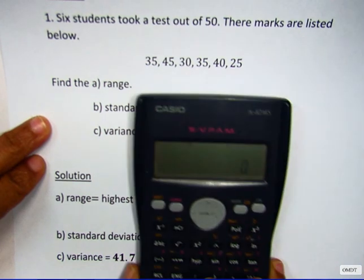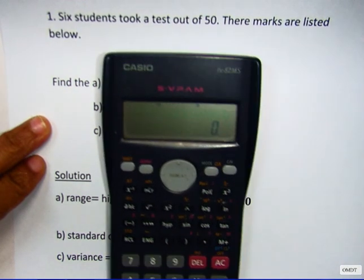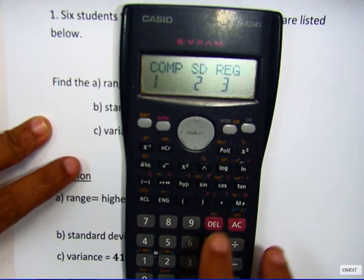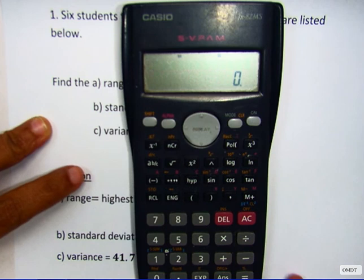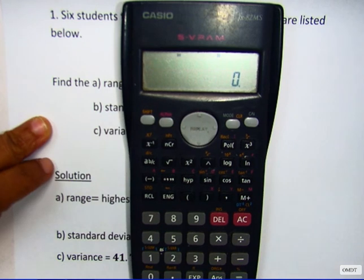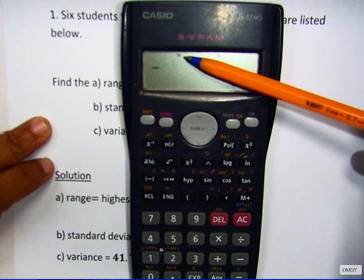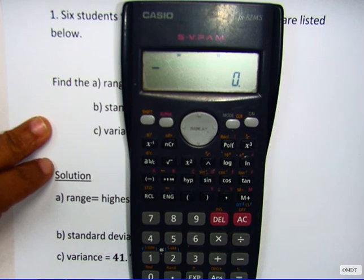First thing, using your calculator, you need to press Mode 2. You will see a small symbol at the top of your calculator which says SD. Next you enter the data and press M+.